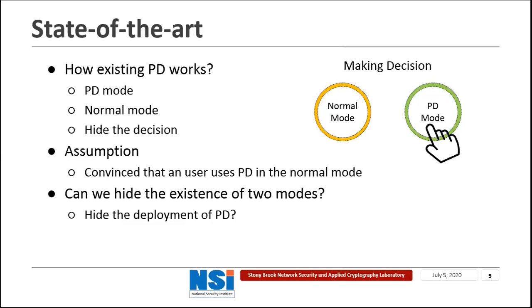So can we hide the existence of the two modes in a PD scheme? Or in other words, can we have some PD scheme whose deployment can be hidden from the adversary? This is the topic we want to focus on in this work in Infuse: how can we hide the deployment of a PD scheme?